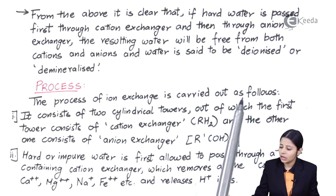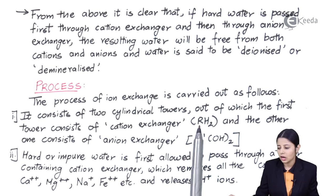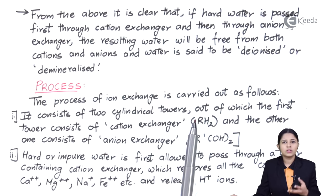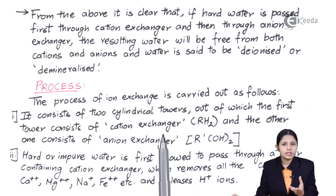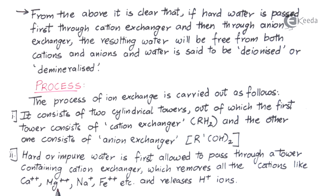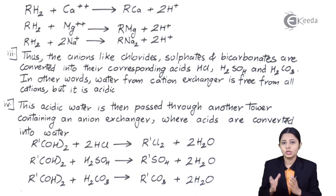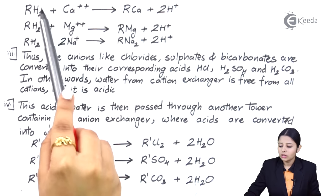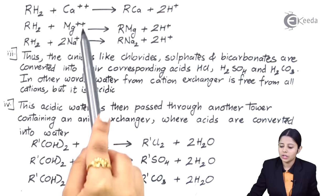The process of ion exchange is carried out as follows. It consists of two cylindrical towers: the first tower contains the cation exchanger RH₂, and the other contains the anion exchanger R'(OH)₂. RH₂ removes cationic impurities such as Ca²⁺, while R'(OH)₂ removes anionic impurities such as SO₄²⁻. The hard water is first passed through the cation exchanger tower, which removes all cations like Ca²⁺, Mg²⁺, Na⁺, Fe²⁺, etc., and releases H⁺ ions.